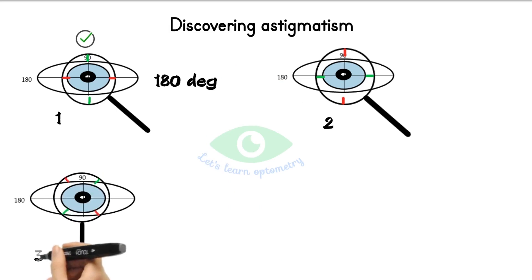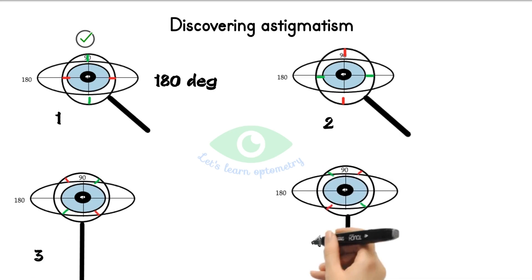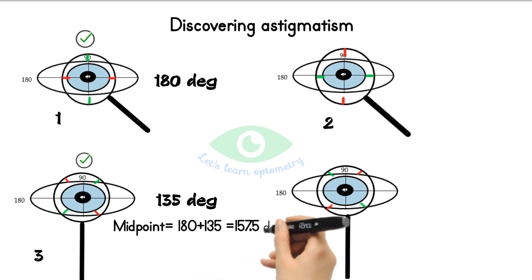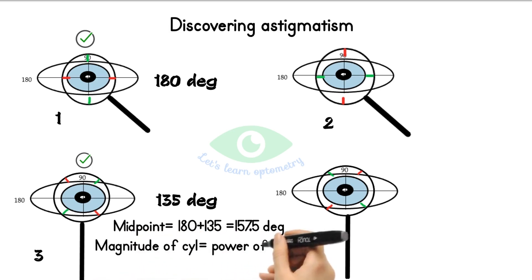Now hold the handle so that the axis markings are at 135 and 45 degrees and ask for the patient's preference. If the patient prefers position 3, where the minus axis is at 135 degrees, note this. Take the midpoint between the two preferred axes: the midpoint of 180 and 135 degrees is 157.5 degrees, which rounds to 160 degrees. Since the JCC being used is 0.5 diopter, place minus 0.5 at 160 degrees. This gives a rough estimate of cylindrical axis and power, which is then refined using the axis and power refinement steps.